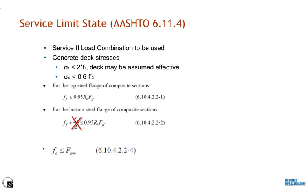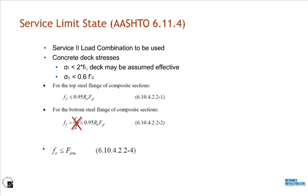For service limit state checks, AASHTO Section 6.11.4 refers to the service limit state section for I-girders. In these checks, if the longitudinal tensile stress does not exceed two times the modulus of rupture of concrete, the deck may be assumed effective and composite section properties can be used for stress calculations. Compressive stress in the deck cannot exceed 60% of the strength of the deck concrete. For this limit state check, both flanges are checked for flange yielding and web bend buckling. In equation 6.10.4.2-2, there is a flange lateral bending stress variable — however, it's only applicable to I-girder bridges and not applicable for tub girder bridges.